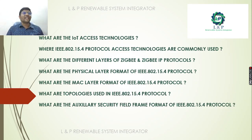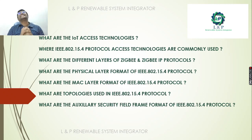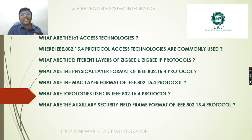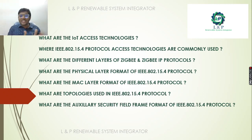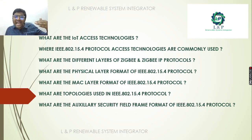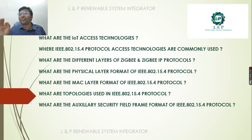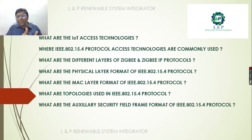So what are the things we are going to discuss in part 2 today? We will cover what access technologies are used in IoT, what is IEEE 802.15.4 protocol, where it is commonly used, what are the different layers of ZigBee and ZigBee IP protocols, what is the physical layer and MAC layer format and topologies, and what is the auxiliary security frame format of IEEE 802.15.4.